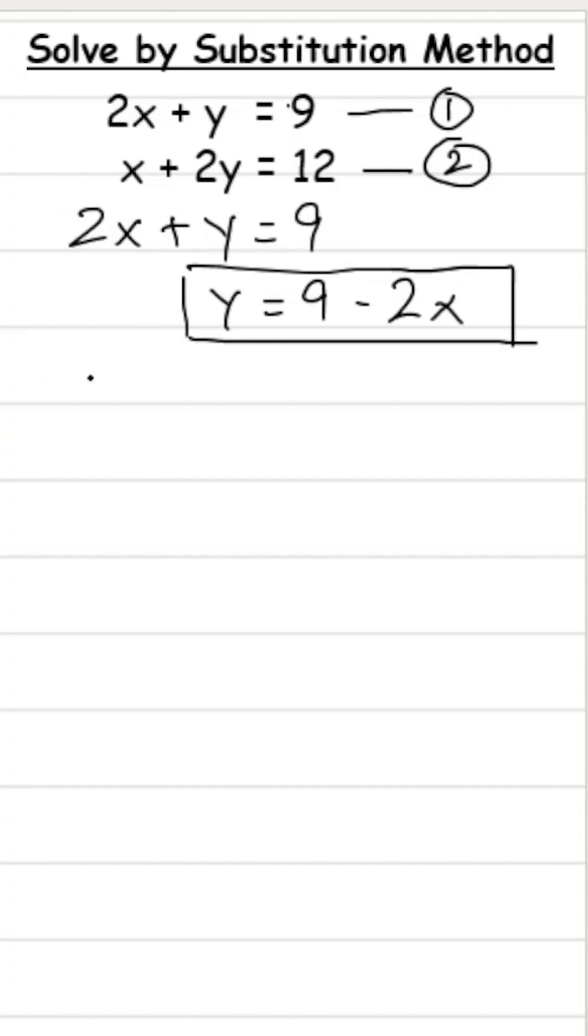So the second equation would become x plus 2 times, in place of y, I am going to put this 9 minus 2x equals 12.